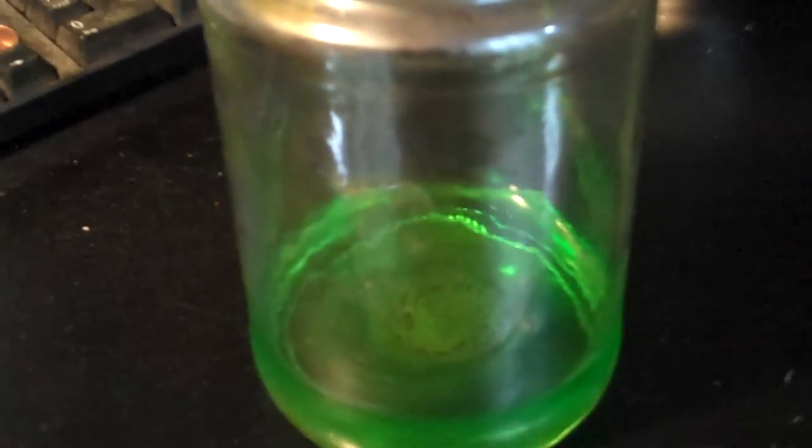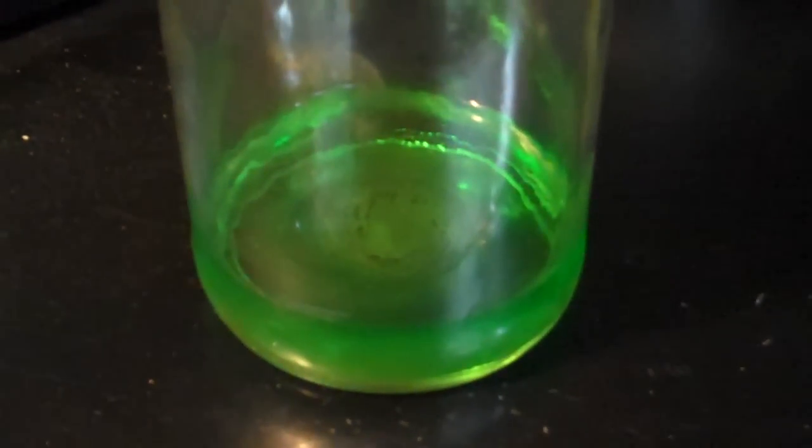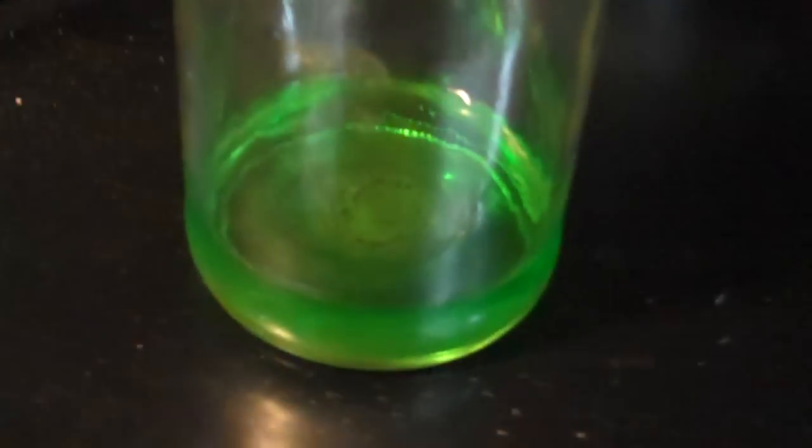What's up y'all? Feats here. What you're looking at is a pickle jar with a little bit of acid in it that has turned to copper chloride because of the copper. That's the green stuff.